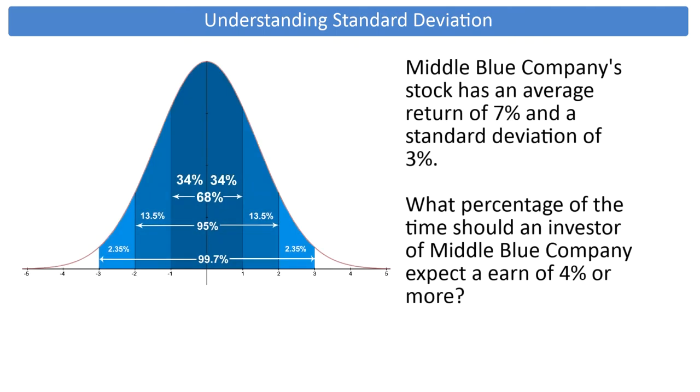Here's an example of how to use average and standard deviation on a CFP exam question. Middle Blue Company's stock has an average return of 7% and a standard deviation of 3%. What percentage of the time should an investor of Middle Blue Company expect a return of 4% or more?